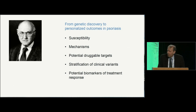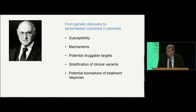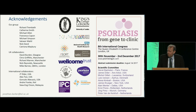I'm going to finish there. I hope I've talked to you about psoriasis and genetics and towards personalized outcomes. Significant progress has been made in identification of susceptibility factors. Genetics has led to advances in mechanisms including potential druggable targets. It's now clear that we're able to stratify clinical variants of the disease, and maybe the nomenclature needs to change. We're now looking towards potential biomarkers of treatment response. As a humble clinical dermatologist, this work requires large numbers of individuals to help. Thank you very much for your attention.